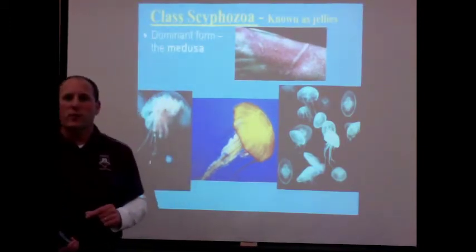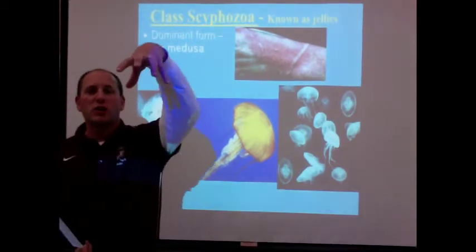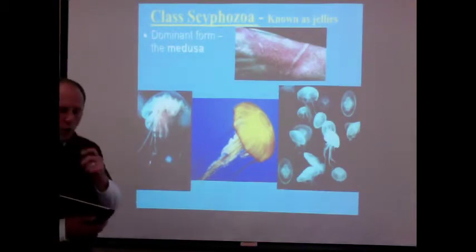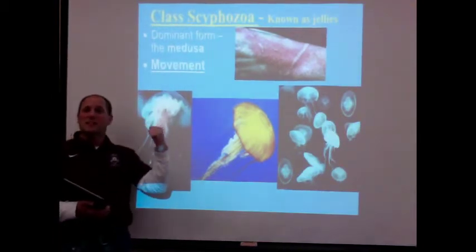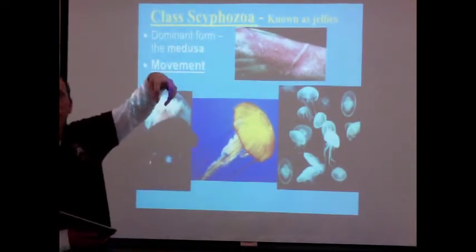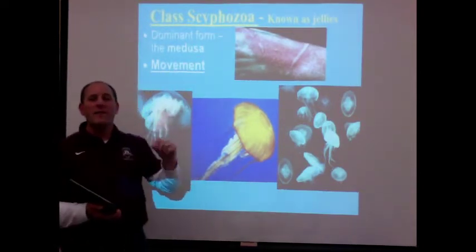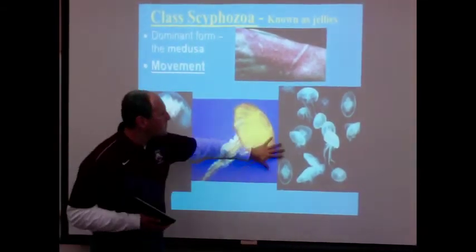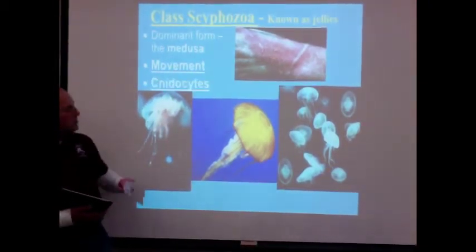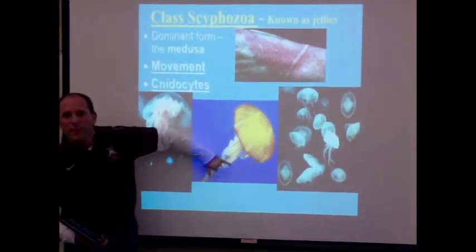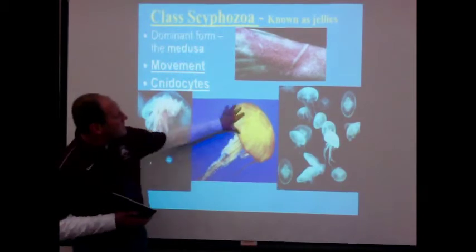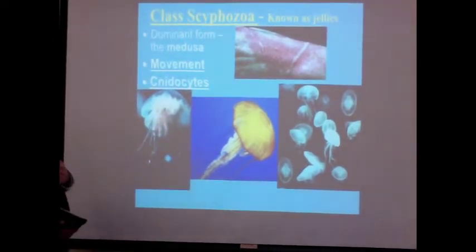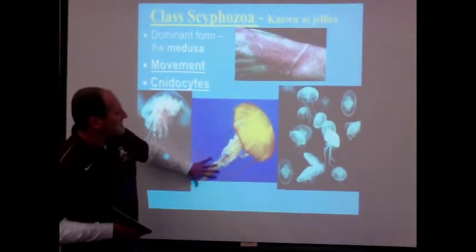The dominant form these organisms have is the medusa — that bell-shaped form we talked about last time. This bell-shaped form pulsates and swims; that's how these organisms move. To control that pulsating motion of the bell, they have a nerve net, a bundle of nerves right around the edge of the bell. Their nidocytes are located in the tentacles, coming down from that bell-shaped organism. The tentacles are the danger area.